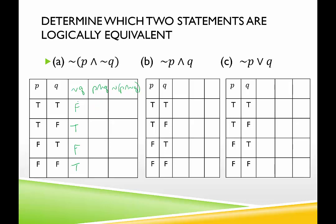P and not Q — this is a conjunction, I need them both to be true. True and false is false. True and true is true. False and false is false. False and true is false. And then we negate that, giving us: true, false, true, true.